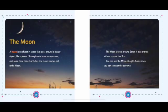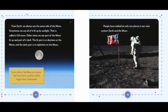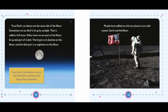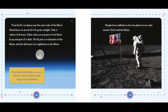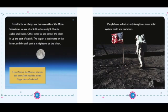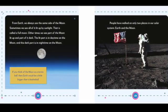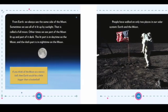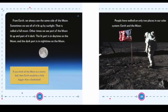The Moon. The moon is an object in space that goes around a bigger object like a planet. Some planets have many moons and some have none. Earth has one moon and we call it the moon. The moon travels around Earth. It also travels with us around the sun. You can see the moon. You can see the moon at night. Earth is in daytime on the moon and the dark part is in nighttime on the moon.